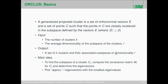ORCLUS is a generalized projected clustering algorithm. A generalized projected cluster — which is actually a correlation cluster — is defined by a set of orthonormal vectors E and a set of points C. The set of points are densely packed in the subspace defined by the vectors E. E is typically smaller than the original feature space D, but can be full-dimensional. The input is similar to PROCLUS: the number of clusters k and the average dimensionality L of the subspaces.